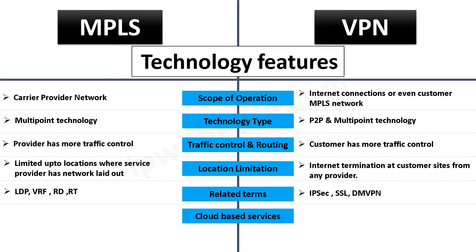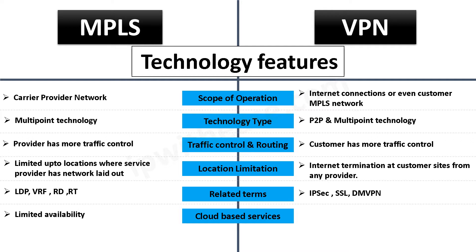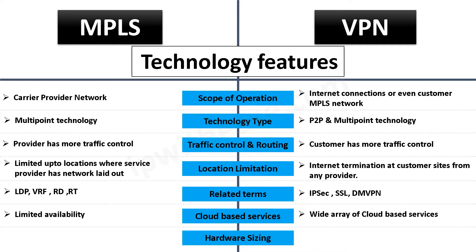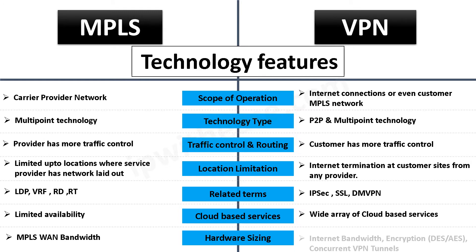Cloud services have limited availability for MPLS-based customers, while with VPN there is a wide array of cloud services available. Hardware sizing for MPLS considers MPLS WAN bandwidth, whereas VPN considers many factors like internet bandwidth, encryption type (DES or AES), and the number of concurrent VPN tunnels when sizing suitable hardware to support VPN.